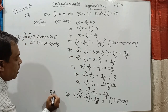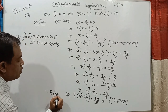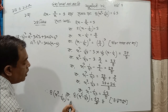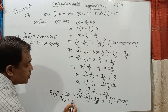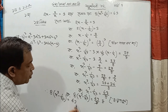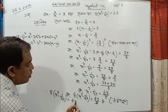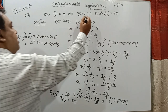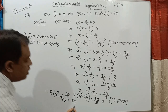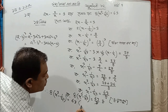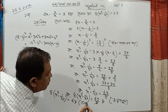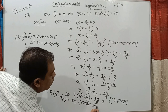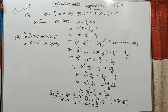So 8 times x³ minus 1 by x³, so x³ minus 1 by x³ — so this is the same thing, so we will see the same thing. So this is the first thing.